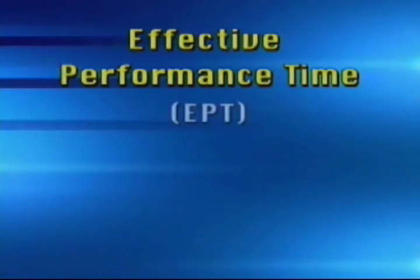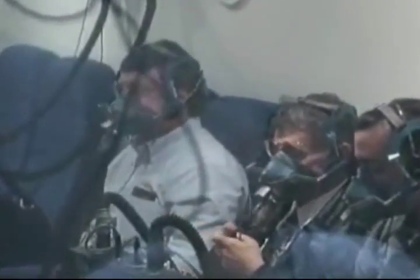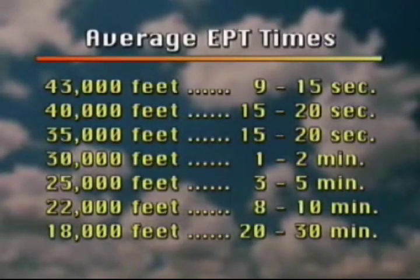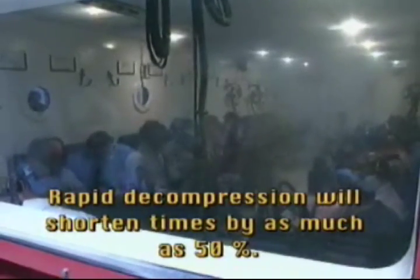Effective performance time, EPT, and time of useful consciousness, TUC, are two interchangeable terms used to describe human tolerance to hypoxia. They refer to the amount of time elapsed from the interruption of oxygen supply or individual exposure to an oxygen-poor environment to the time when such an individual is no longer capable of performing routine flying tasks or taking proper corrective action against hypoxia. This chart shows the average EPT time at various altitudes. These times are to be used as averages only and are based on a healthy individual in a controlled environment at rest. It is important to remember that a rapid decompression will shorten these times by as much as 50%.